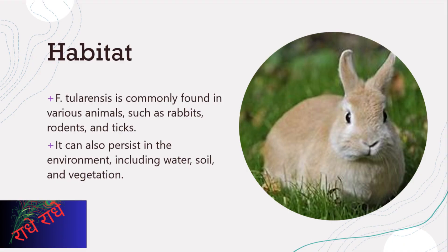Francisella tularensis is commonly found in animals such as rabbits, rodents, and ticks, and can also persist in the environment, including water, soil, and vegetation. This makes it important to take precautions when handling animals or spending time in areas where the bacterium may be present. It is also important to properly dispose of animal carcasses and avoid drinking untreated water from potentially contaminated sources.